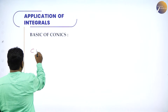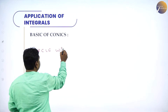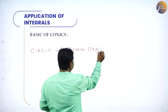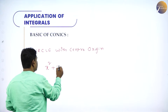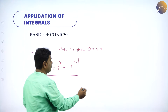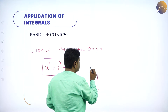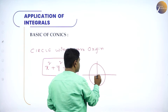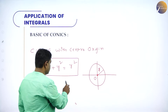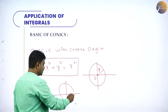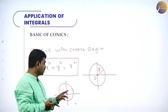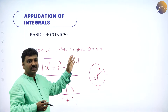Circle with center origin. In 11th standard or in your first year, you have studied center origin. What is a circle with center origin? X square plus Y square is equal to R square — radius square, or A square. The center of the circle is origin, and radius is A units or R units. This is the diagram: X axis, Y axis, and the circle with center at origin. The equation X square plus Y square equal to R square represents the equation of a circle whose center is origin.